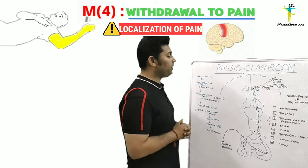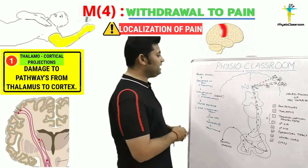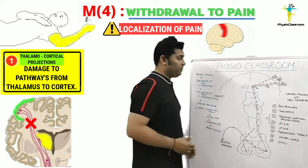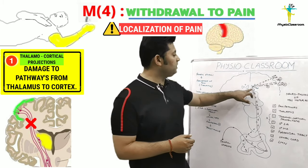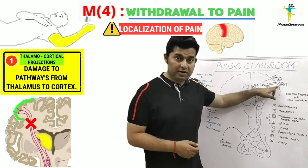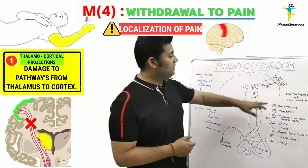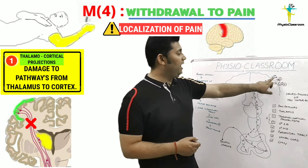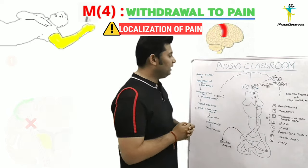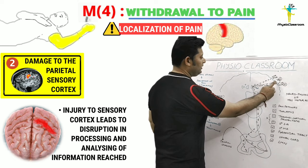This failure of pain localization can happen with three important scenarios. The first probability is that there is an injury or disruption of the thalamocortical projections, which are responsible for transmitting painful stimuli signals to the parietal sensory cortex. As a result, the brain remains unaware about the site of pain, and the parietal cortex is unable to send feedback signals to the motor cortex.